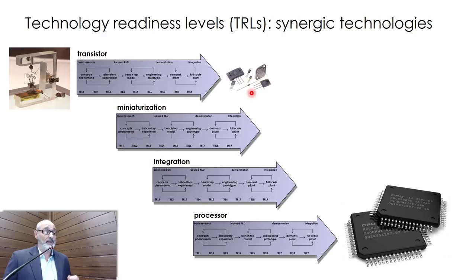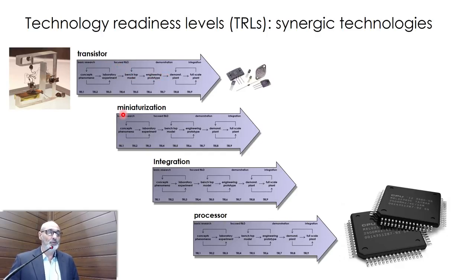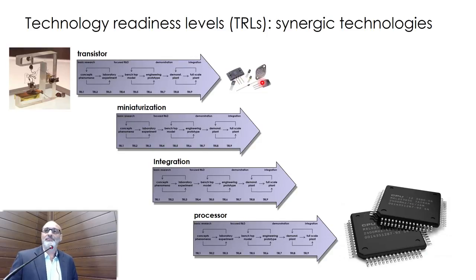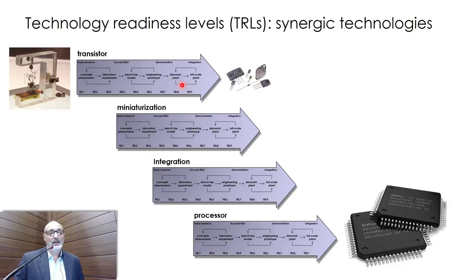Another important thing is that the process is not linear — it may involve cycles of development and it also incorporates other developing technologies. In this case, you have a transistor becoming a CPU; a CPU is actually a million transistors. You need miniaturization, integration, and of course processing. It's not linear — it should integrate other technologies that are evolving as well. That's the whole point.